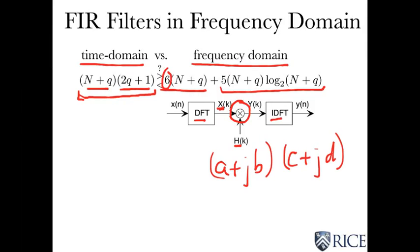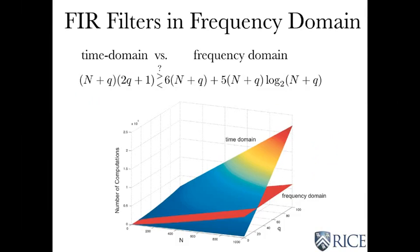So the question is, which is smaller? Whichever is smaller is going to be the one that we want to choose. We do not want to choose the one that's bigger. That would mean more computations. So let's see how that works.